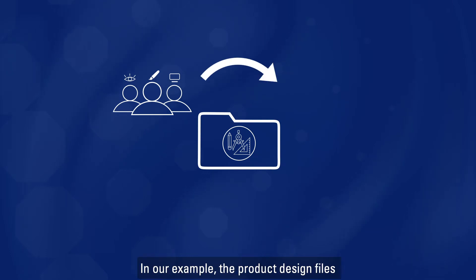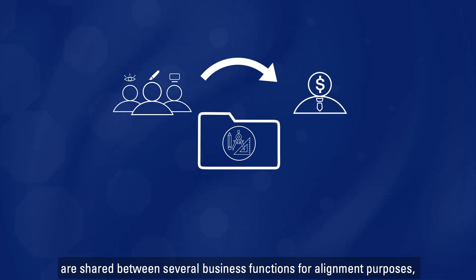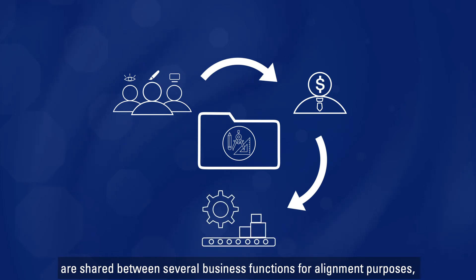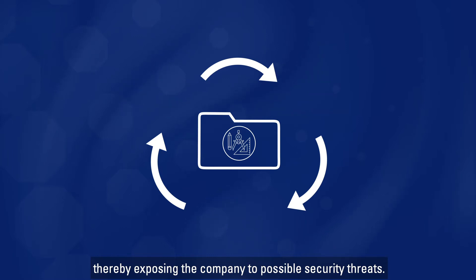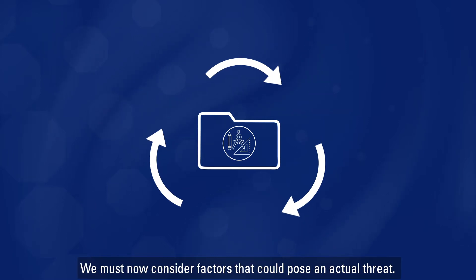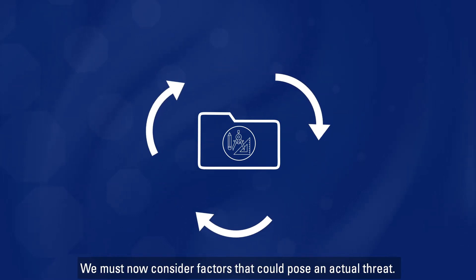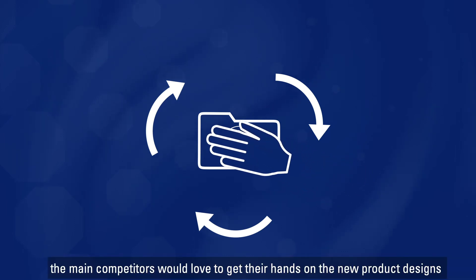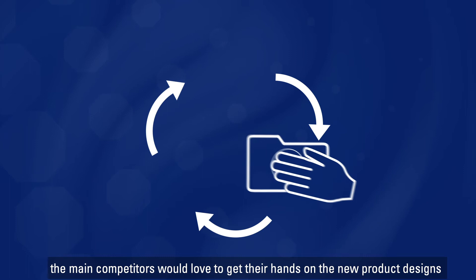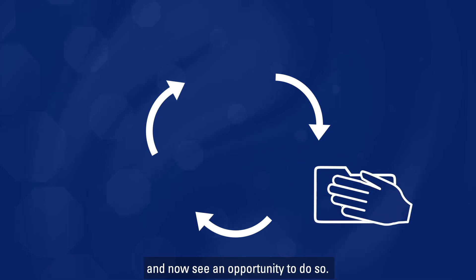In our example, the product design files are shared between several business functions for alignment purposes, thereby exposing the company to possible security threats. We must now consider factors that could pose an actual threat. In our case, the main competitors would love to get their hands on the new product designs and now see an opportunity to do so.